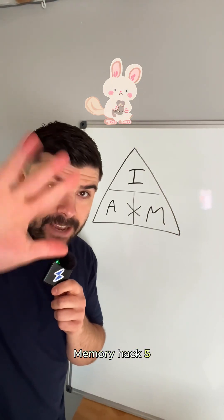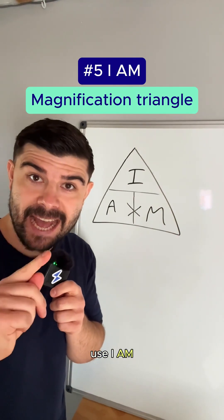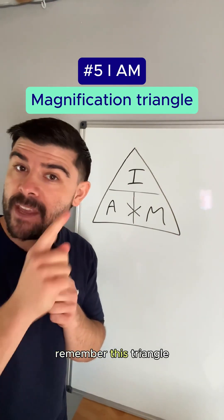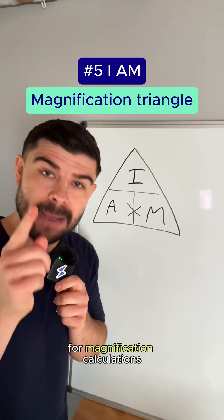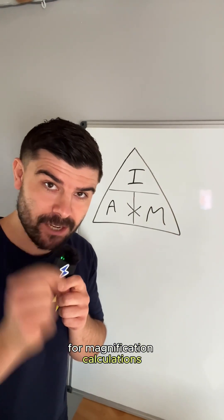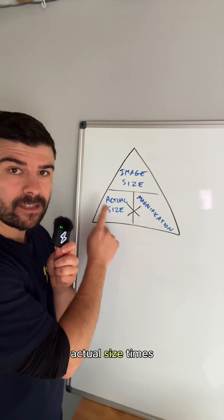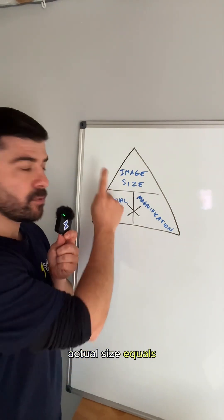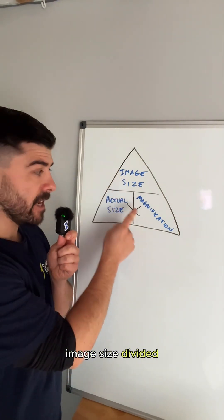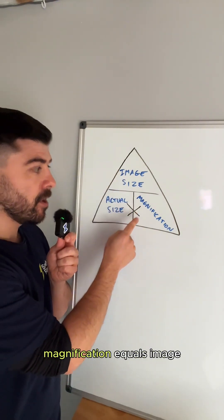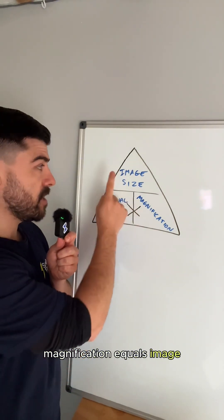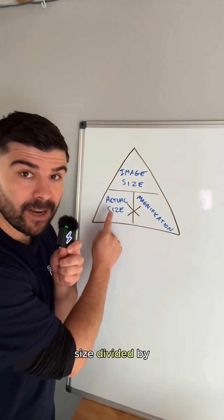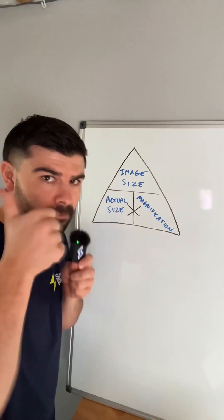Memory hack five: use 'I AM' to help you remember the triangle for magnification calculations. Image size equals actual size times magnification. Actual size equals image size divided by magnification. Magnification equals image size divided by actual size.